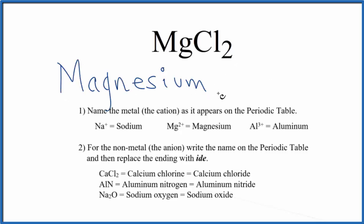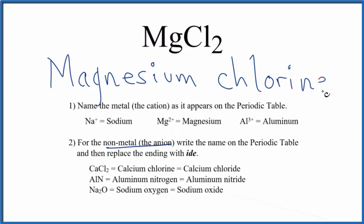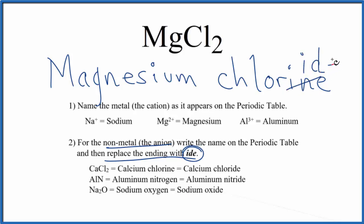And then we write the name for the non-metal, the chlorine, as it appears on the periodic table, but we start out with a lowercase c. And then we replace the ending with I-D-E. So the I-N-E becomes I-D-E.